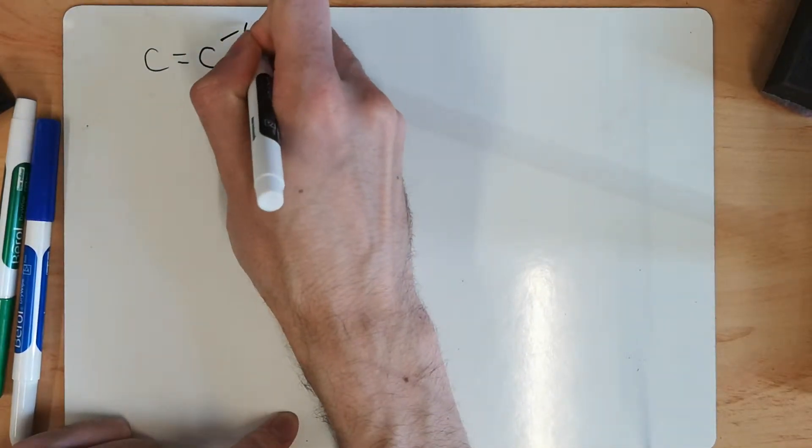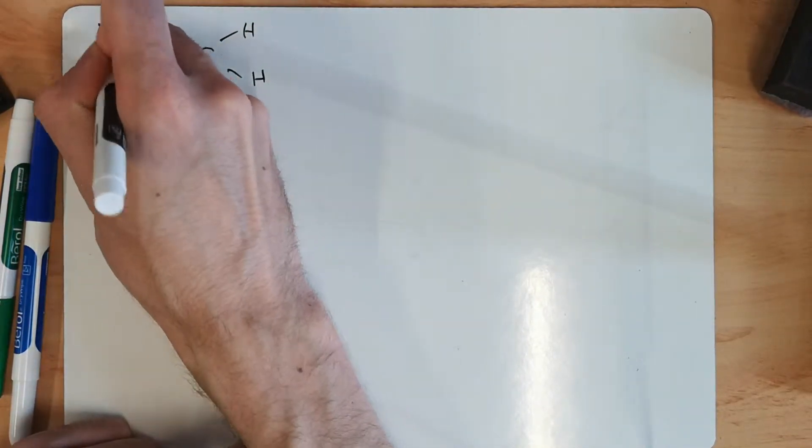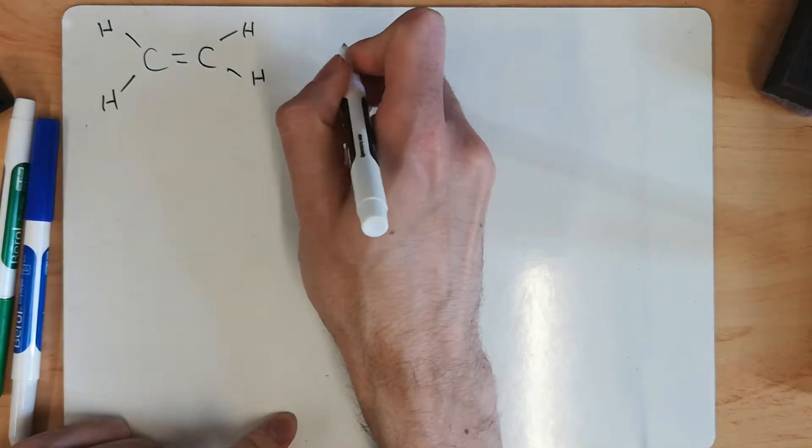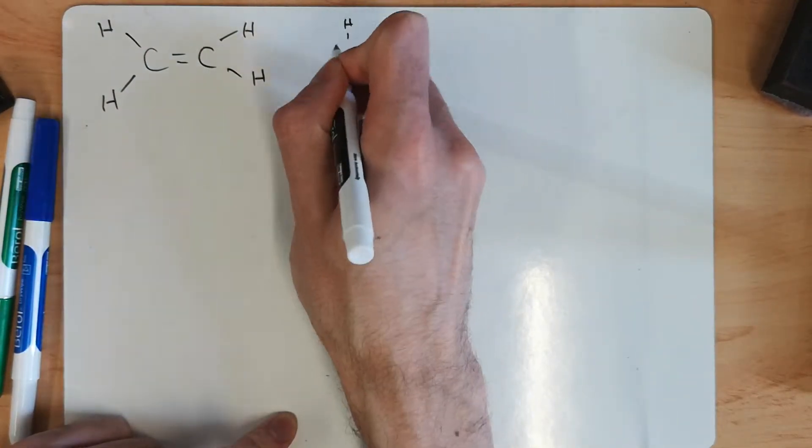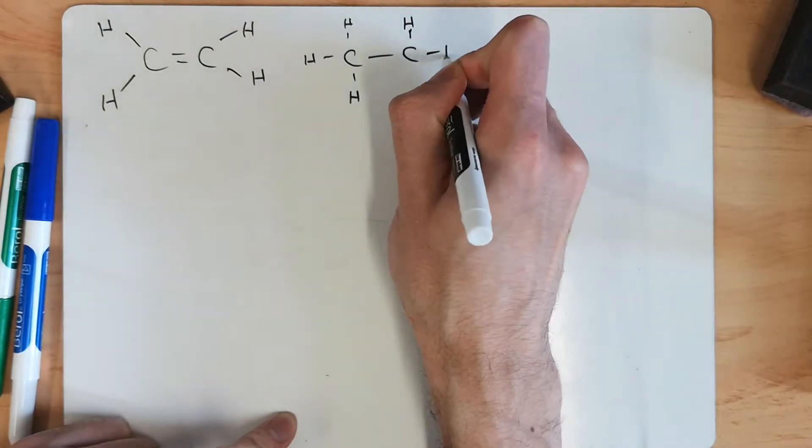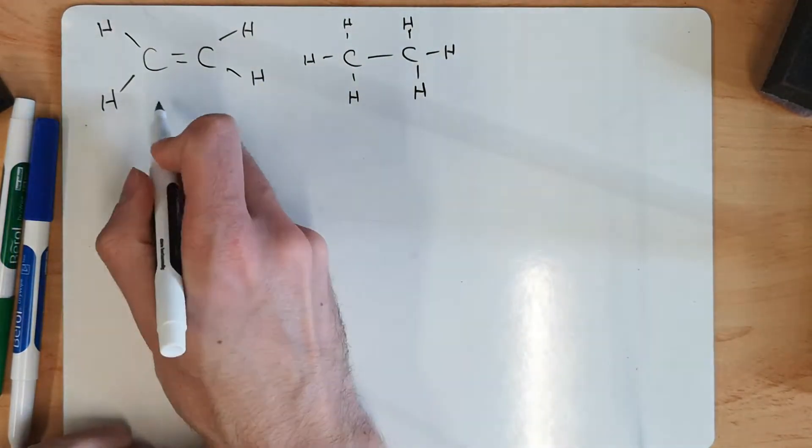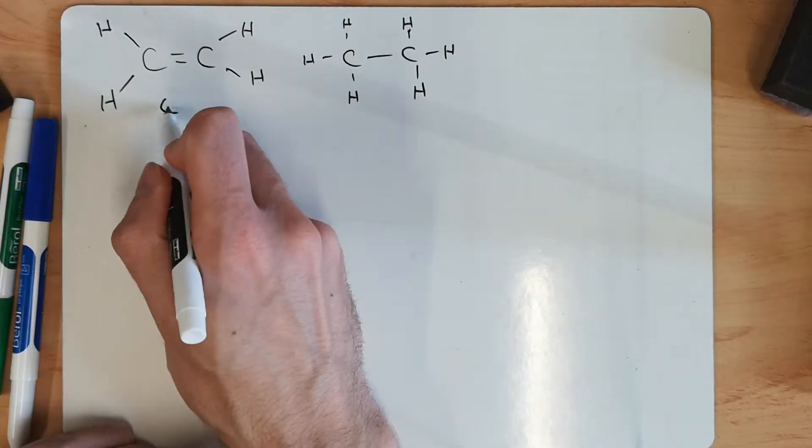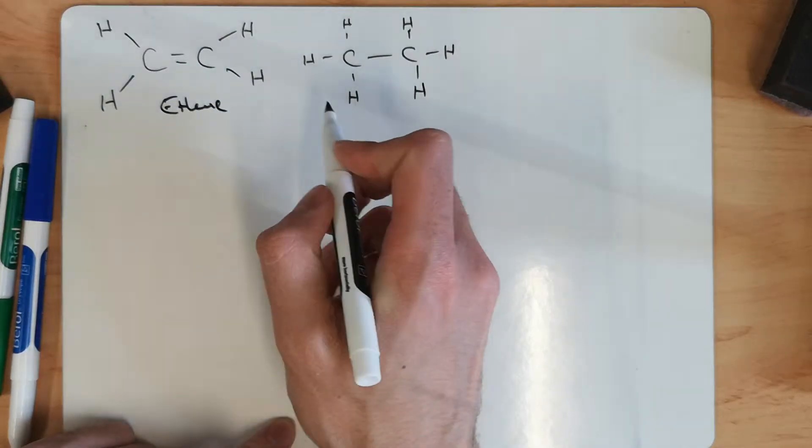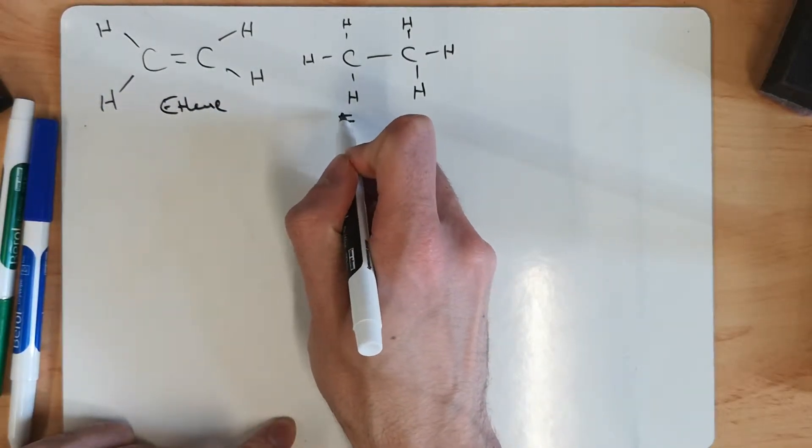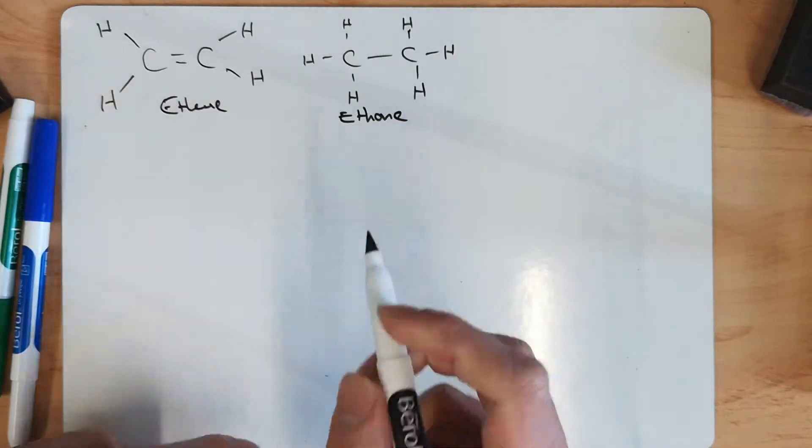When we have our alkene like this, and our alkane like that, this one, alkene, which in this case is ethene, is more reactive than our ethane.